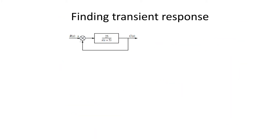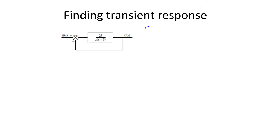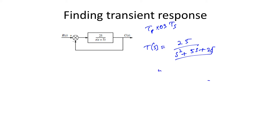For the system shown in the figure, we need to find the peak time, percent overshoot, and settling time. The closed-loop transfer function is given by 25 divided by (s² + 5s + 25). Comparing with the standard form s² + 2ξωn·s + ωn², we get ωn equal to the square root of 25, which is 5.